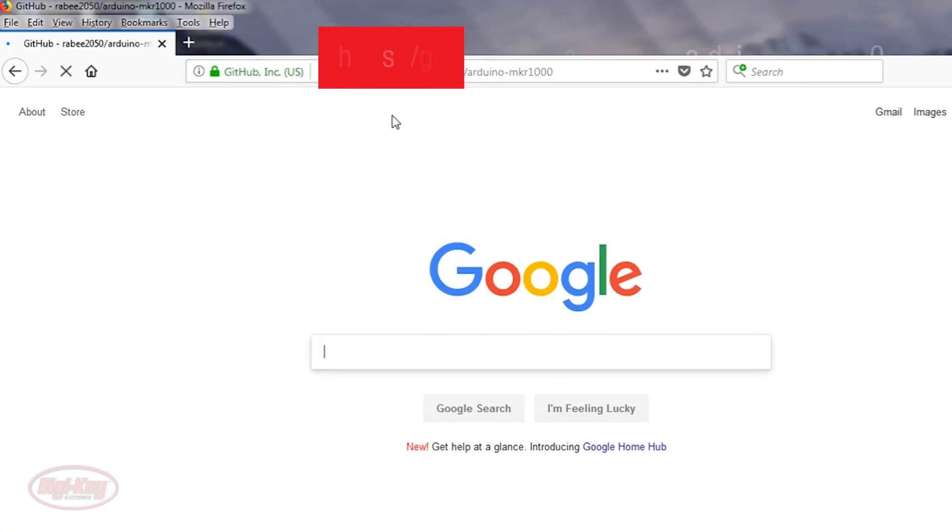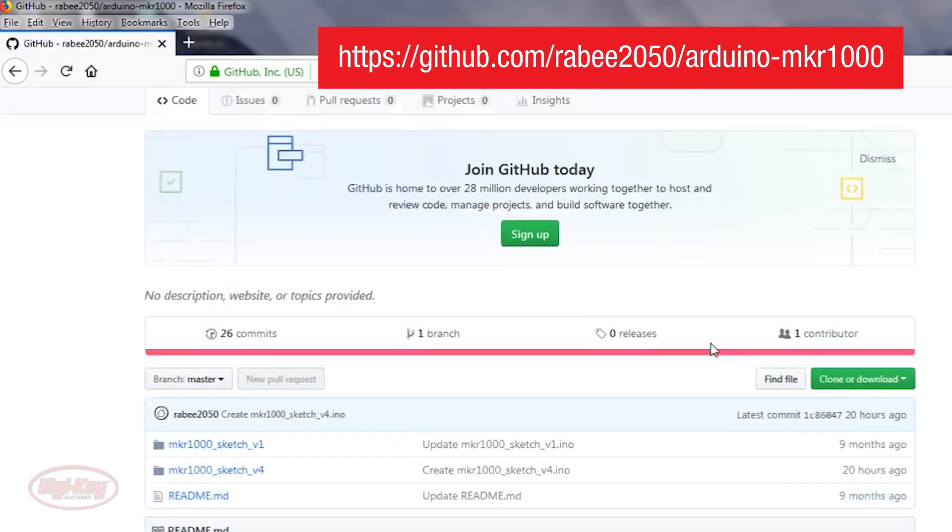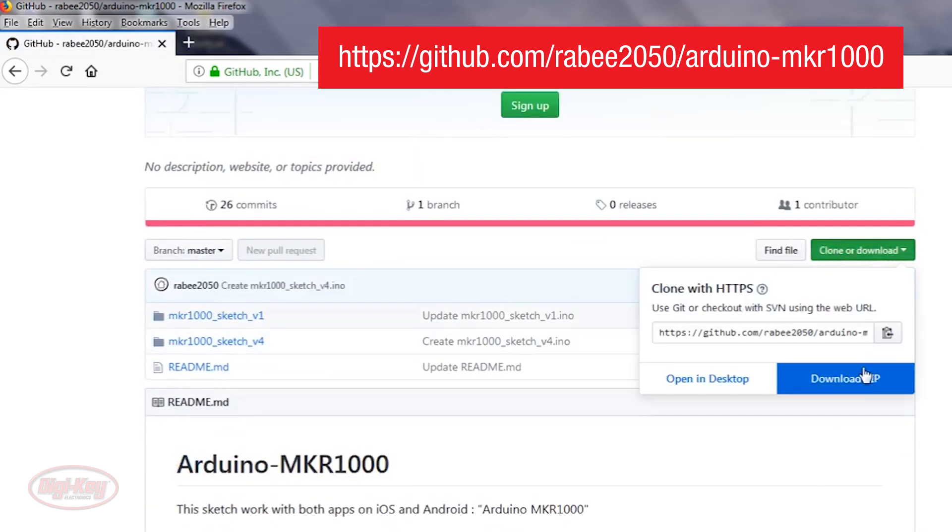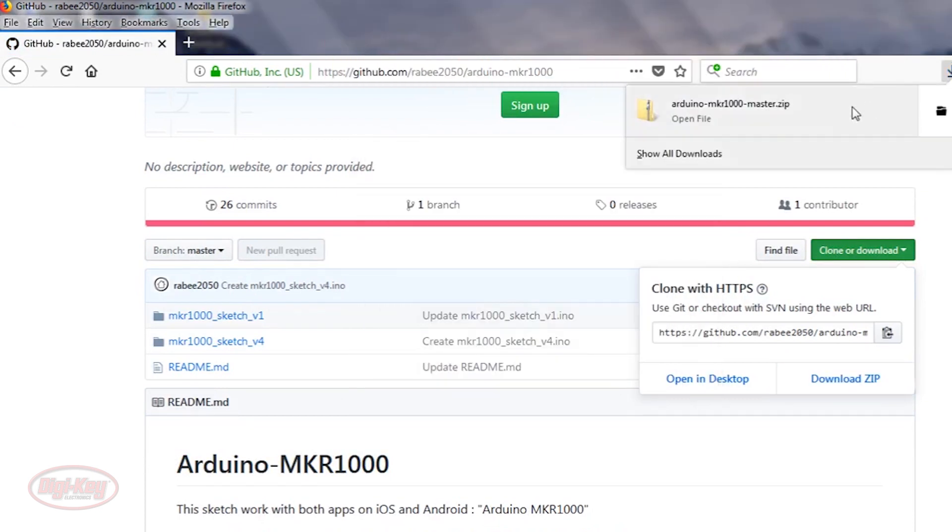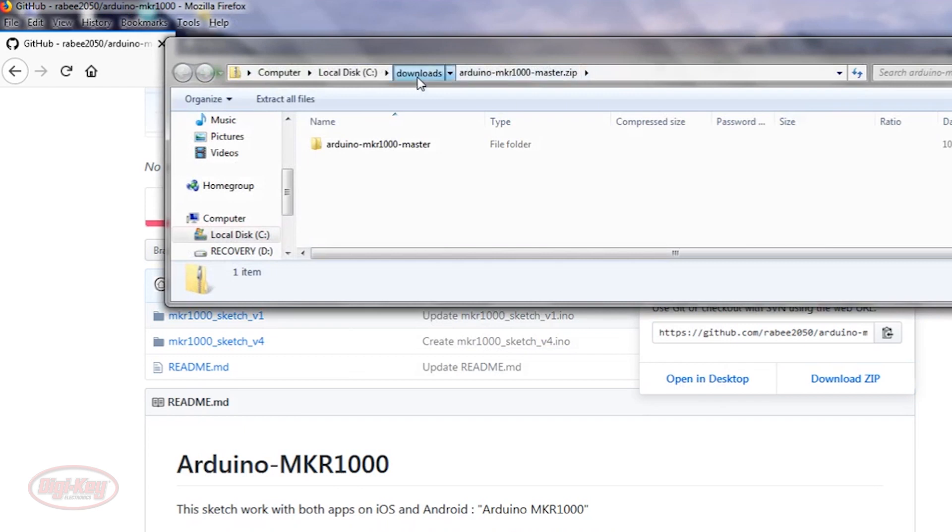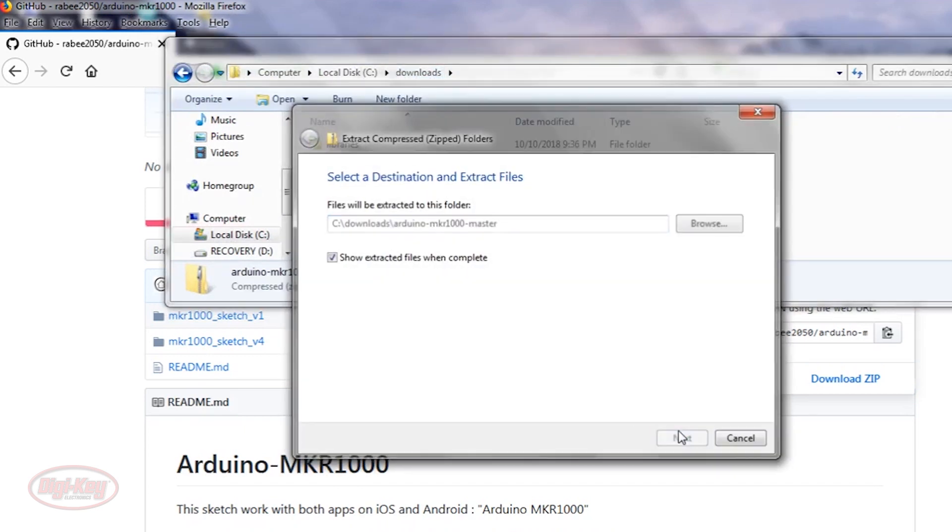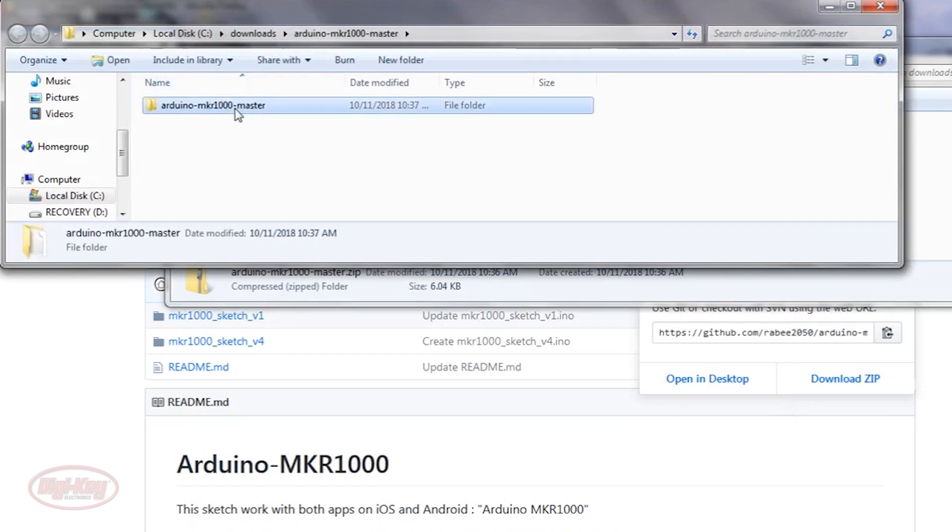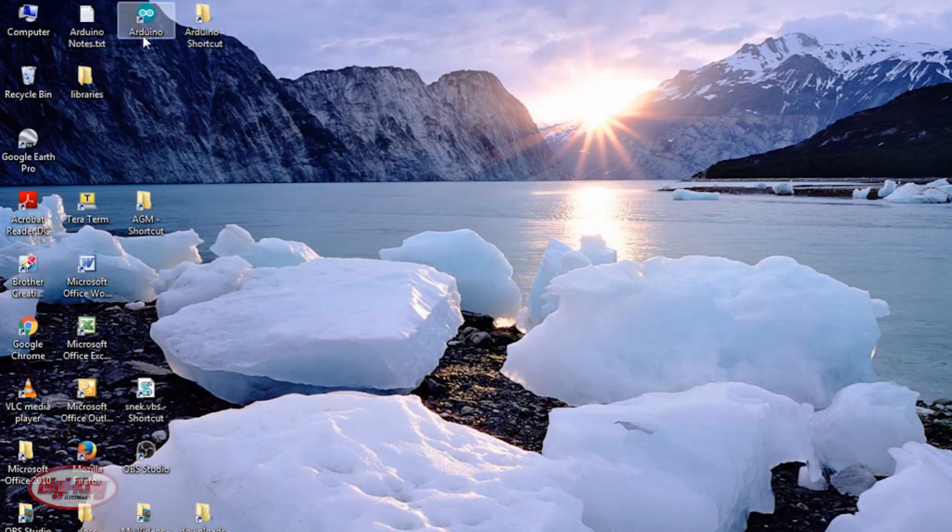Okay, to get the sketch, I'm going to go to GitHub. Here's the address here, arduino-mkr1000. And download, save, and extract.